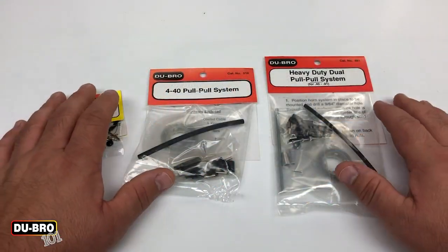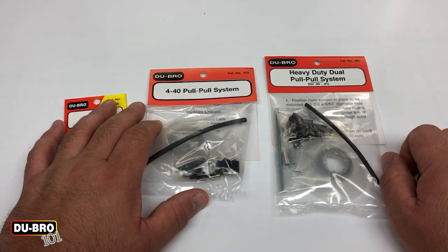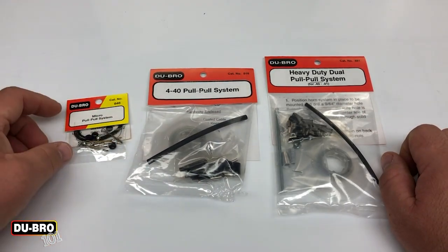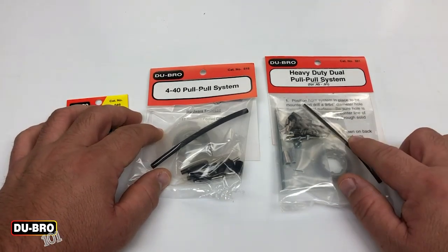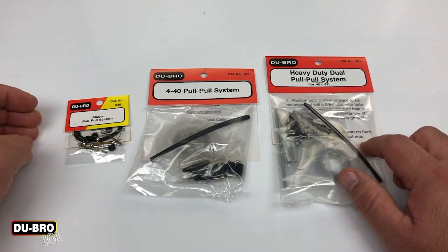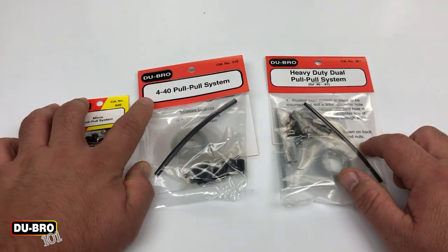So to start things off, you have three different size selections for the different types of pull-pull systems that you can utilize. There's micro, 440, and heavy duty.